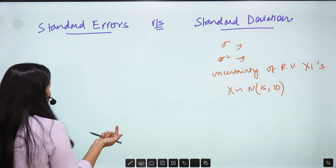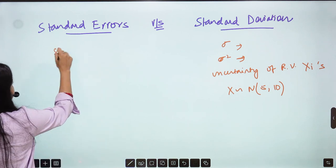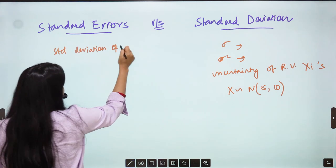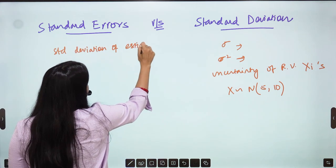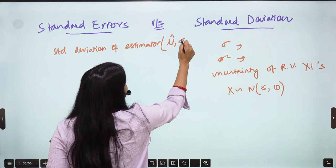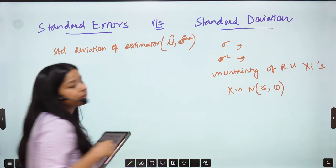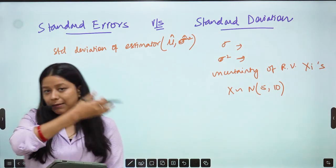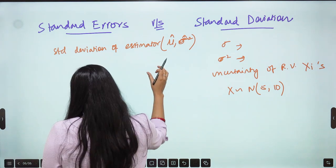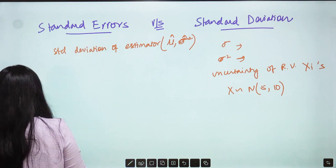So when you calculate the standard deviation of any estimator, just like what you did for mu hat, just like what you did for sigma hat square. Any estimator, parameter ka estimator hum jo nikalate hai. If you calculate the standard deviation of estimator, that is your Standard Error.